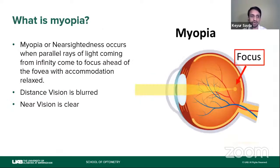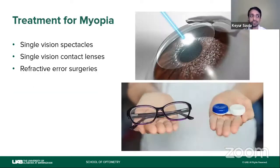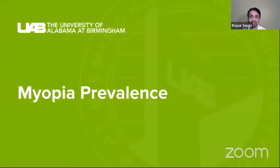The objectives for today's talk are to understand who is at risk of developing myopia and what theories we think cause progression. Quickly, myopia or nearsightedness occurs when parallel rays of light entering the eye focus ahead of the retina when accommodation is relaxed. Distance vision is blurred and near vision appears clear. Current treatments include single vision spectacles, single vision contact lenses, and refractive error surgeries.